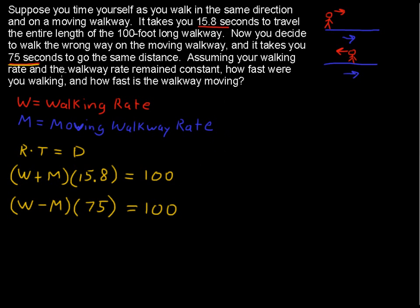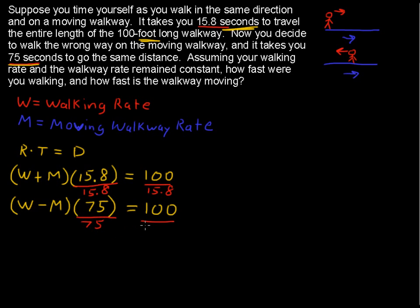We're dealing in feet and seconds, so our rates at the end will be in feet per second. We can solve this system of equations a number of ways. I can see that if we divide each equation by its time multiplier, we can then add the equations and the M terms will cancel out. So divide the first equation by 15.8 and divide the second equation by 75.